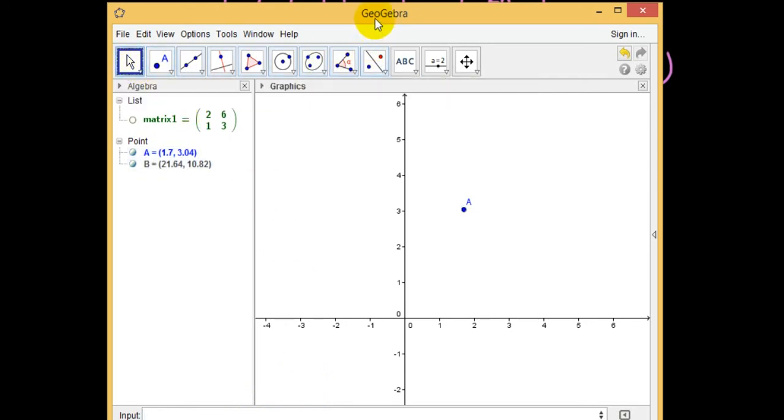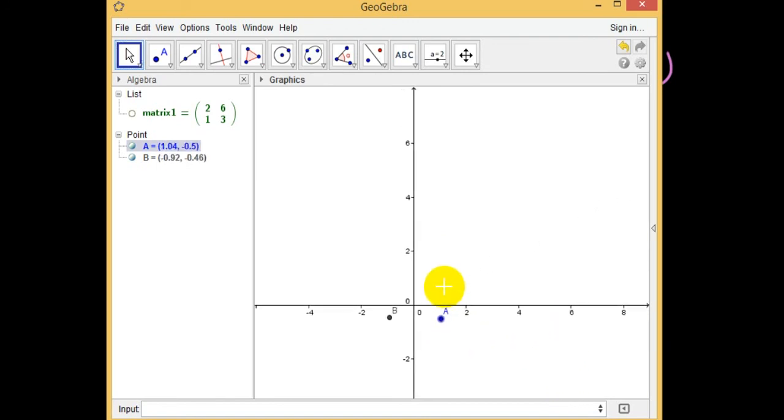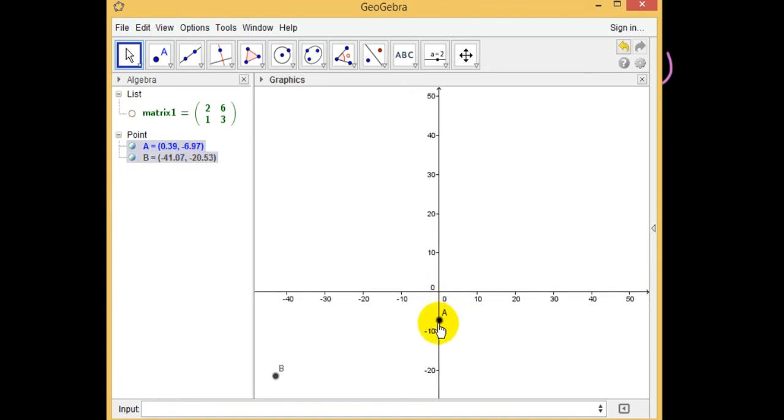And you can see it doesn't matter where I drag point A around on the screen, point B is always on a straight line. And if I zoom out a bit, you will see that it doesn't matter where I drag point A, point B is always on this straight line.